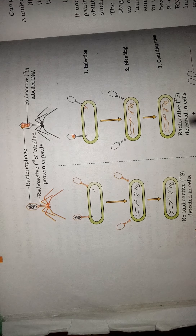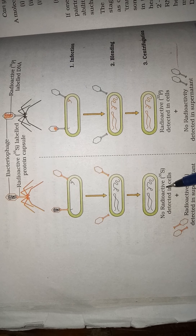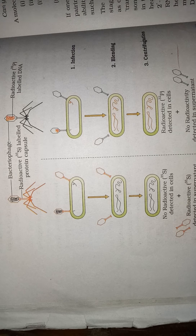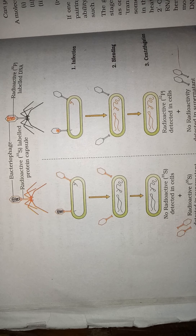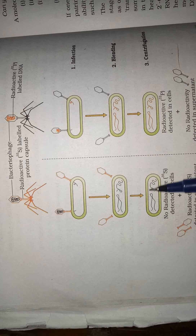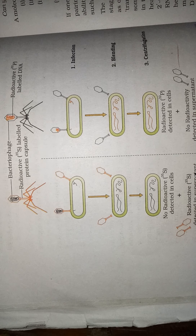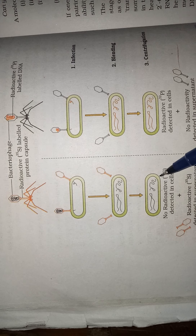After blending, the virus particles which come outside are then subjected to centrifugation. During centrifugation, particles separate into a precipitate and a supernatant — precipitate comes down and supernatant comes upward. No radioactivity of S35 is found in the cells. The cells do not contain any radioactivity from S35; instead, the radioactivity S35 is found in the supernatant, which is the protein capsid of the virus particle that was not transferred into the bacterial cells.